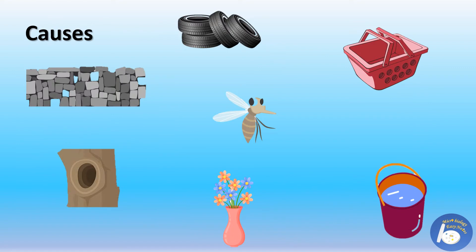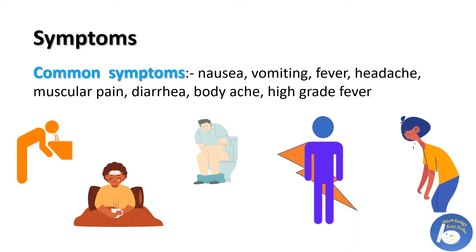The dengue mosquito breeds in water, specially in deposited water found in tires, baskets, buckets, vases, tree holes, wall holes, and cracks. Because this water is not running, it becomes the perfect breeding ground for mosquitoes.